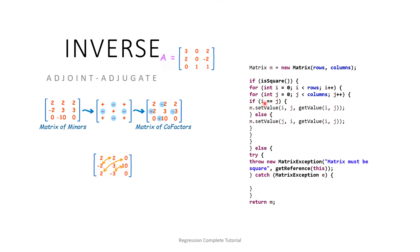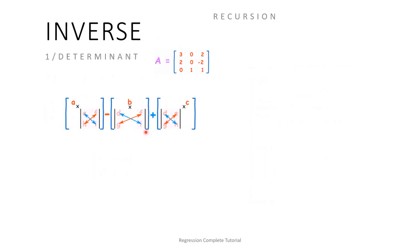In the swap method, if i equals j (diagonal position), the value stays the same. If it's not on the diagonal, we swap the position to produce the adjugate matrix.